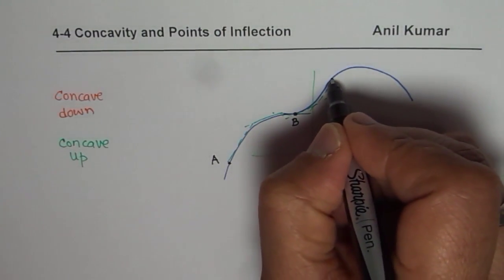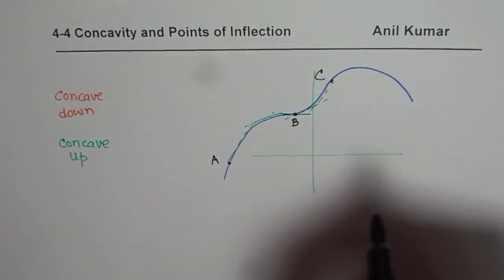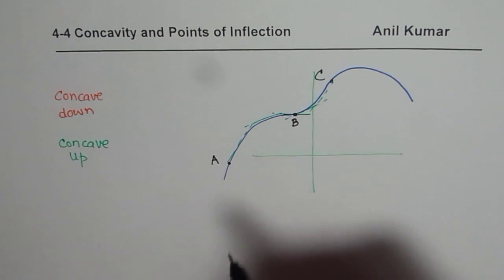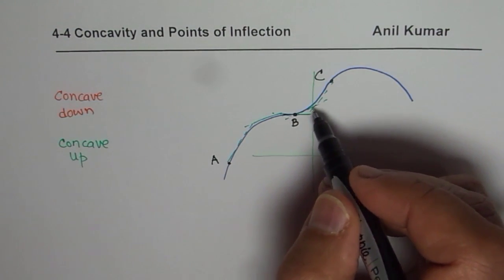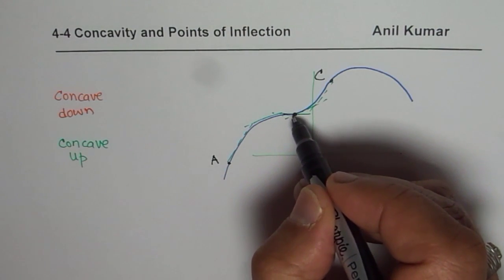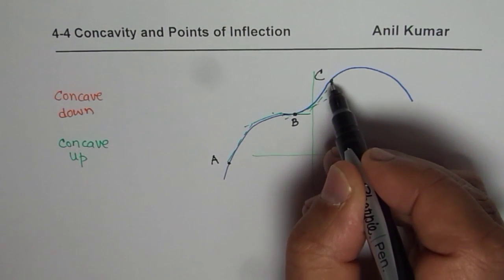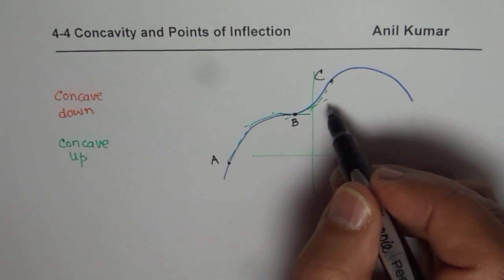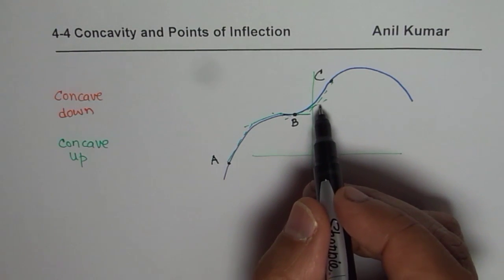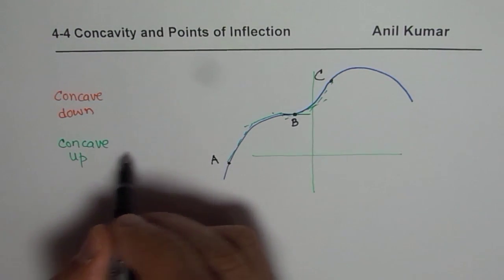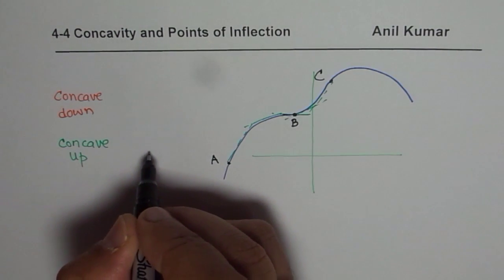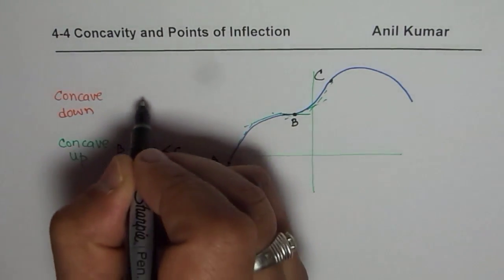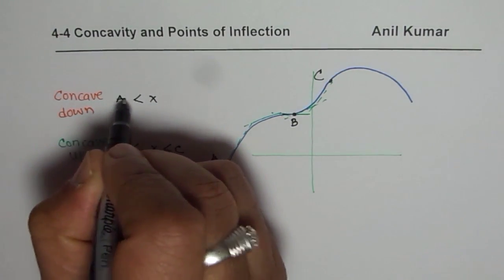So if we consider the graph between A, B, and C: from A to B it is concave down, and from B to C it is concave up. A simple test is to just draw a tangent line — if the tangent line is under the graph then it is concave up.